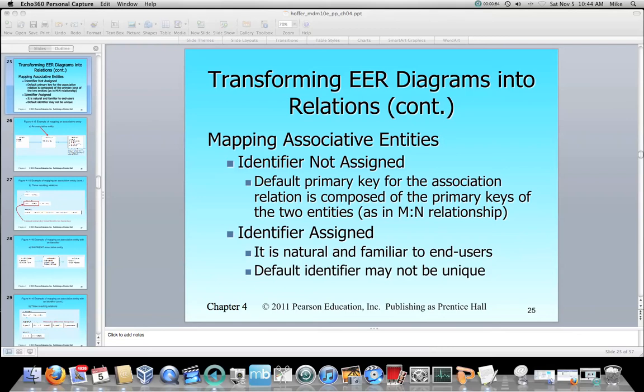In this case the text goes into two different kinds of associative entities. One, the identifier is not assigned, and the other is where the identifier is assigned. And again the identifier is going to be your primary key, your unique identifier, and it's actually the primary key in the ER assistant.